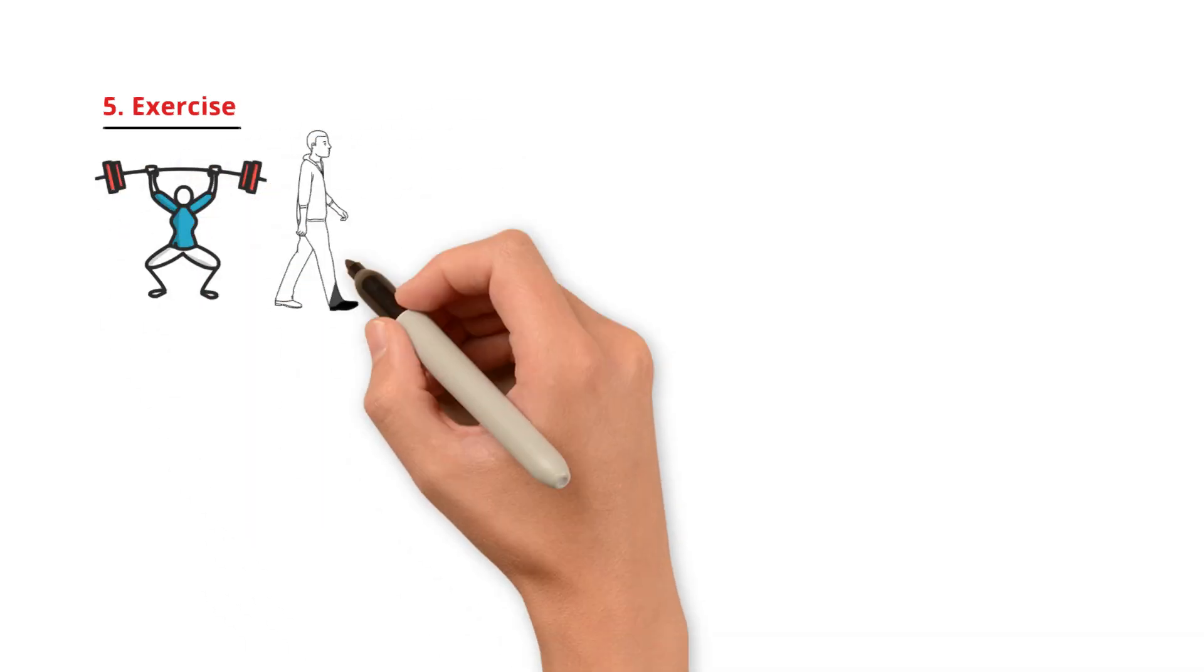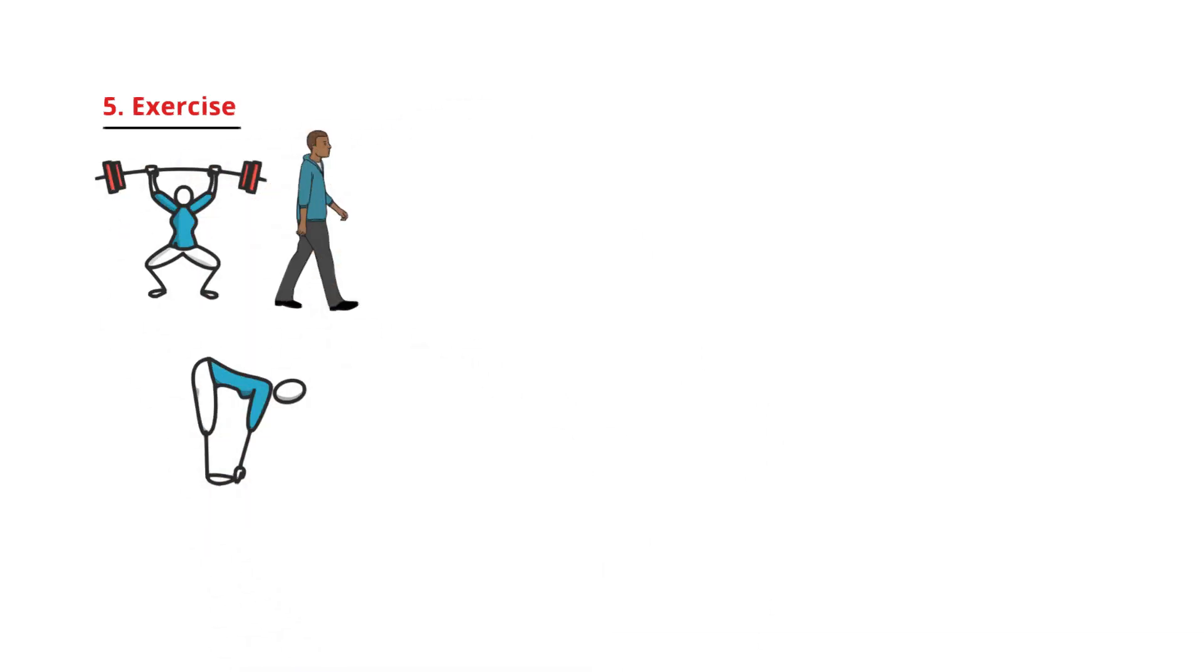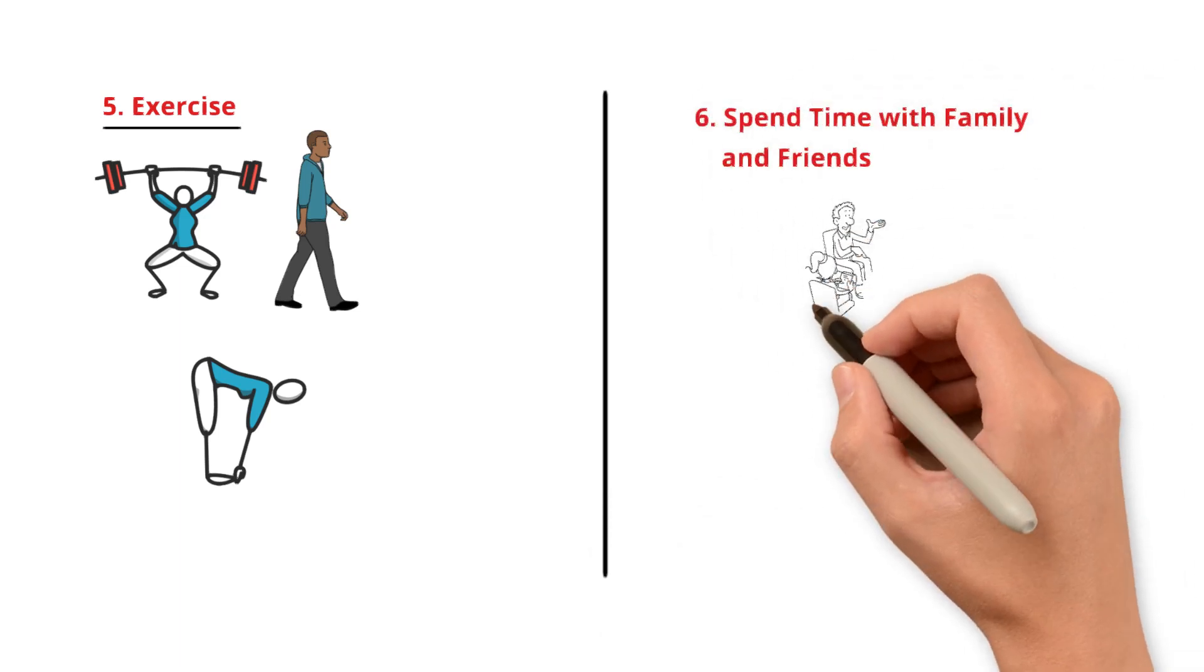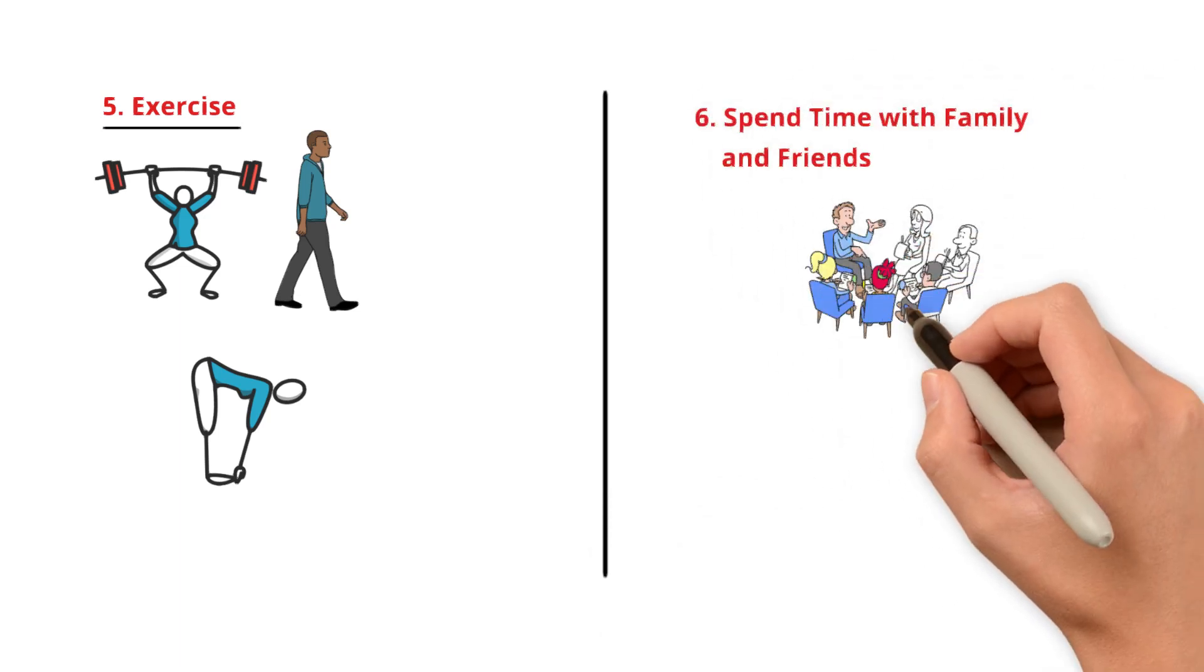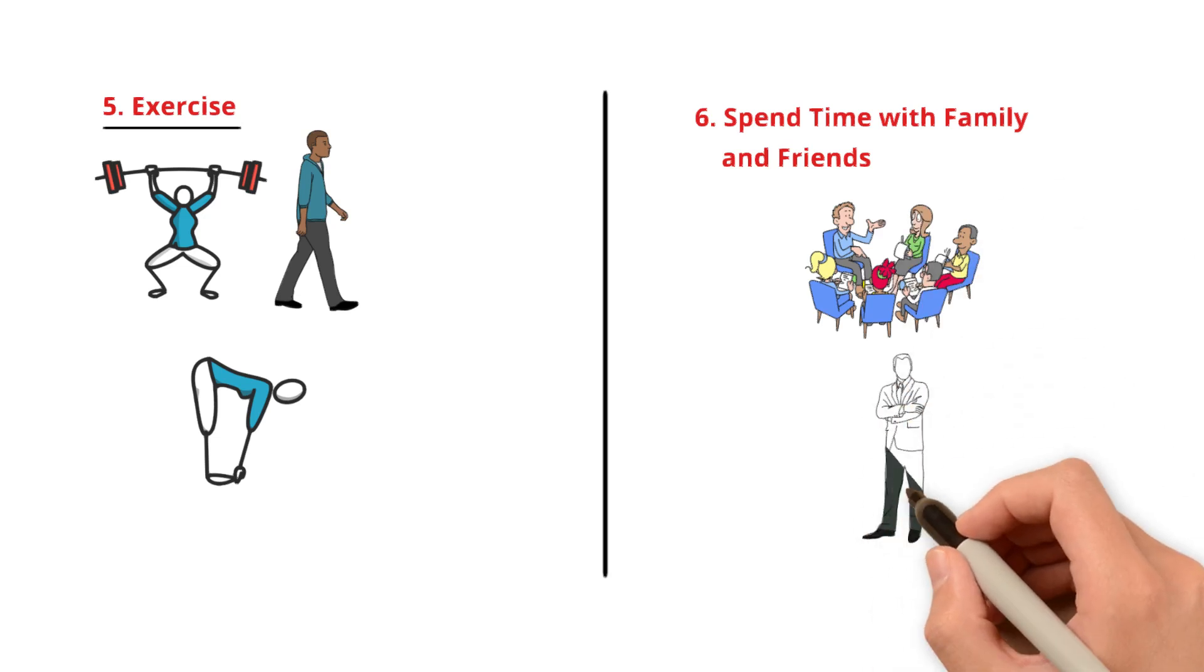Number five. Exercise. Go to the gym. Take walks. Do yoga. These activities release dopamine in a healthier way. Number six. Spend time with family and friends. Real connections are key. Spend time with loved ones and rebuild your dopamine reserves the right way.